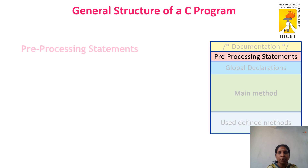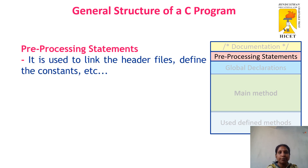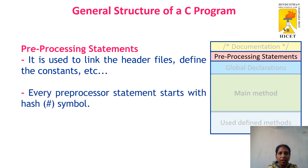Next comes the pre-processing statements. These include all the header files and library files that we want to include in our C program. This section is used to link the header files and all defined constants. Every pre-processor statement starts with a hash symbol.